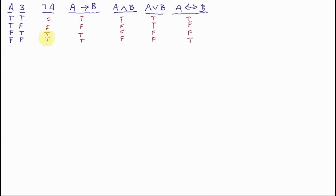Here I've again written out the truth tables for these WIFs associated with these connectives. It is these truth tables that define the truth functions associated with these connectives. We give this symbol, for example, the name conjunction, and we interpret it as somewhat similar in English to the word 'and,' simply on the basis of the truth table in question.